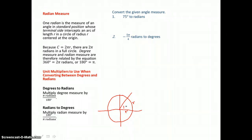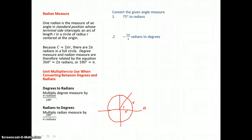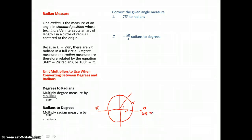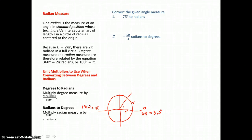Because the circumference of a circle is 2πr, there are 2π radians in a full circle. Which means we start with zero radians, travel halfway and we've gone π radians, and a full circle is 2π radians. Two pi radians is equivalent to 360 degrees, and π radians is equivalent to 180 degrees — that's a half circle.